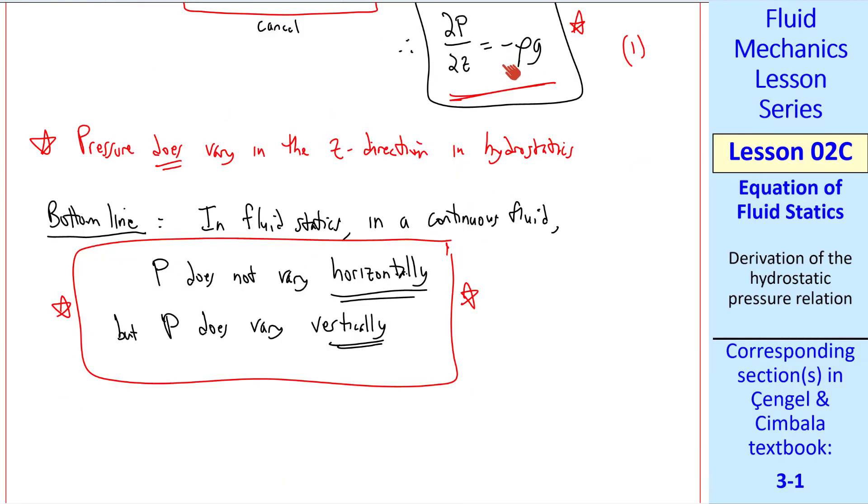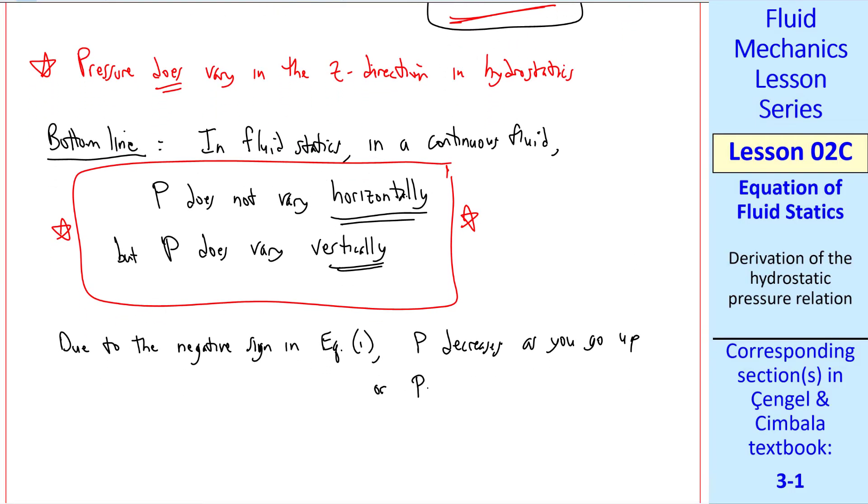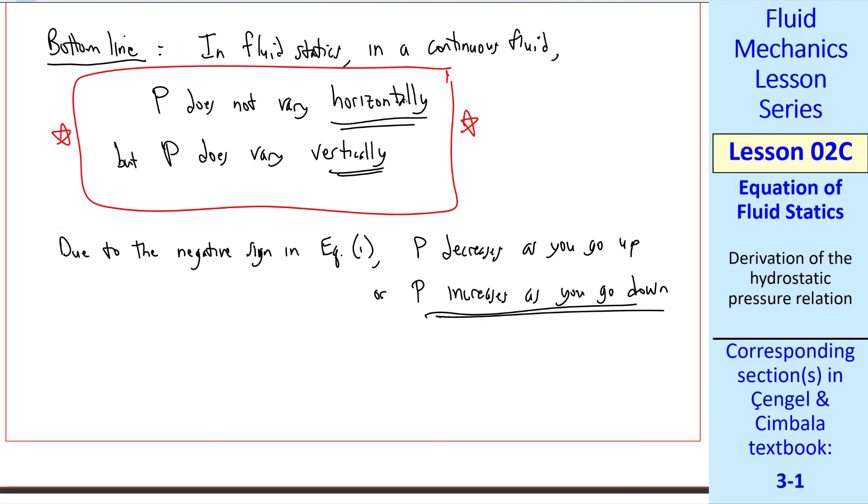Furthermore, because of this negative sign, p decreases as you go up or p increases as you go down. That one's easier to remember. For example, when you go swimming, you get more pressure on your ears as you go down. And this agrees with our previous equation for hydrostatics, which was p below equal p above plus rho g delta z, which you should recall from a previous lesson. This agrees with our derivation now.